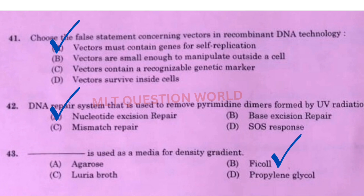Next question: Choose the false statement concerning vectors in recombinant DNA technology. The right answer is option A — vectors must contain genes for self-replication is the incorrect statement. Next one: DNA repair system used to remove pyrimidine dimers formed by UV radiation — the right answer is option A, nucleotide excision repair. Next question: Dash is used as a media for density gradient — the right answer is option B, Ficoll.